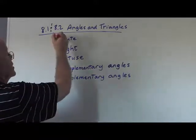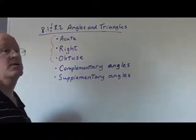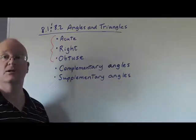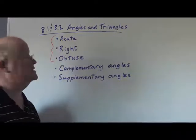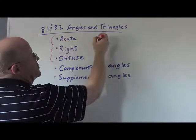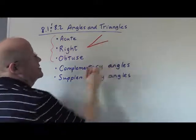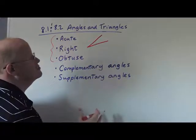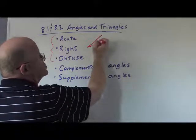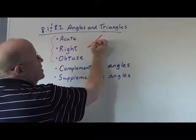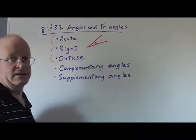The first three words I want to look at are acute, right, and obtuse angles. Now an acute angle is less than 90 degrees. It is a very small angle and generally when we're talking about an angle measure we're talking about how wide open it is.